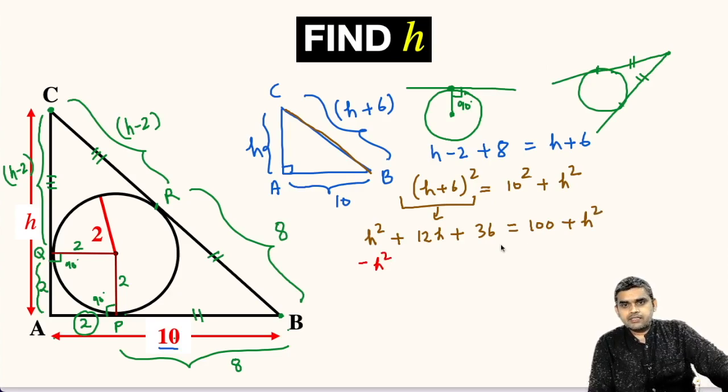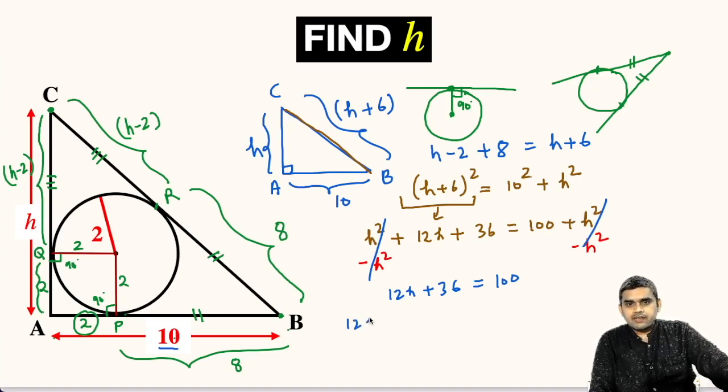Let us subtract h² from both sides. This will be 12h + 36 equals 100, because h² will get cancelled from both sides. So we can write 12h equals 100 minus 36, which is equal to 64.